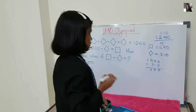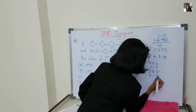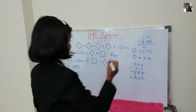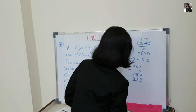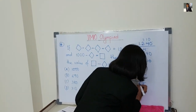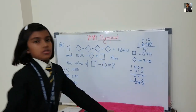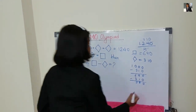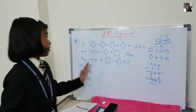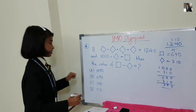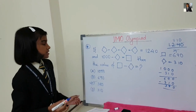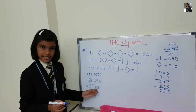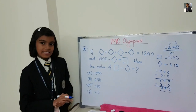The value of square minus diamond: square is 690 and diamond is 310, so we subtract — the answer is 380. Square minus diamond is 380. Isn't it very interesting?